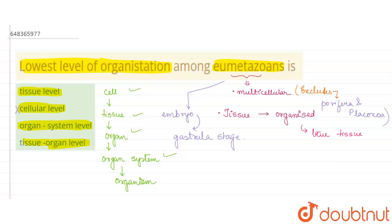But umetazoans have the lowest level of organization as the tissue level organization. This is the lowest level. They have the organ system level, they have the tissue organ levels, but the lowest one is the tissue level. So rest of the options are all wrong. Hope this answer helps you.